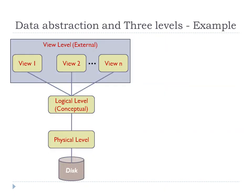Let us see an example and relate the three levels of data abstraction to it. Consider the table called 'train ticket.' At the physical level, the physical schema of the train ticket table describes how the table is stored as a file on the hard disk, how each record of the train ticket table is organized, the file type generated when we create the table, and whether any index exists on the table to boost system performance.